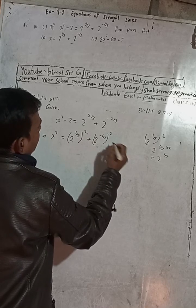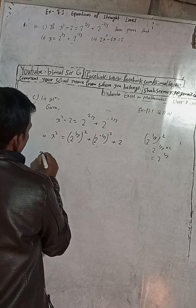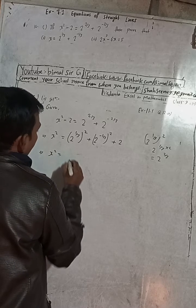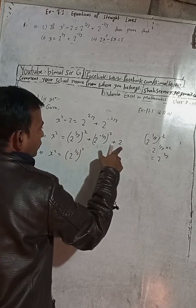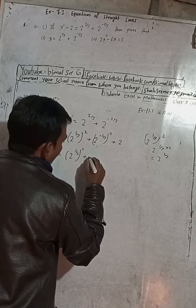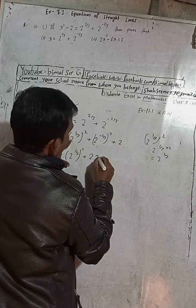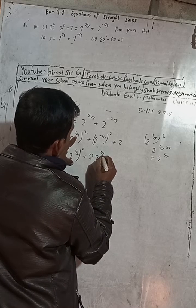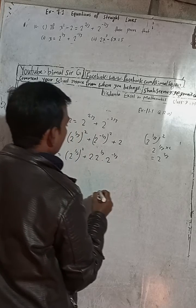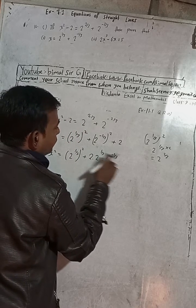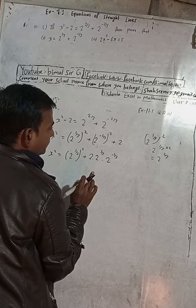And this plus 2 I will take to this side, so minus 2 on this side becomes plus 2 on the other side. Now see: x squared equals 2 to the power 1 by 3 whole squared, and this 2 I am going to write as 2 times 2 to the power 1 by 3 into 2 to the power minus 1 by 3. This works because those powers cancel and we get back 2.